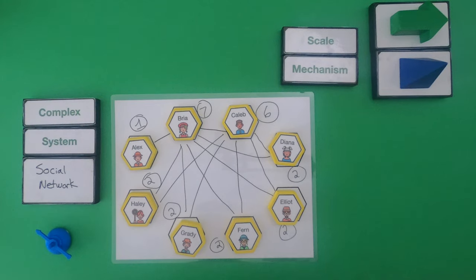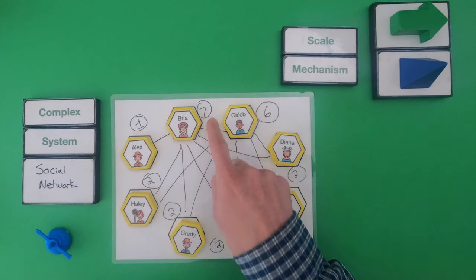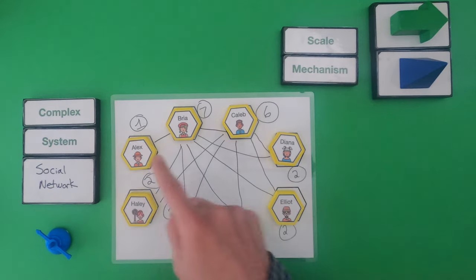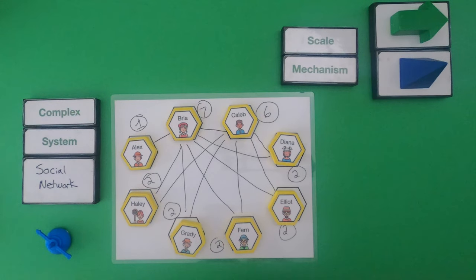So if we look at the numbers again. So Bria has seven connections. That sounds familiar. Alex has one. Caleb has six. And everybody else has two. So you can see that we're starting to get a similar kind of a network forming. But what are the scale mechanisms? If you would pause the video and try to figure out, based on cause and effect, what are the scale mechanisms? You can easily use a piece of paper or the thinking slides that are below. But then unpause the video and let's see how our ideas compare.